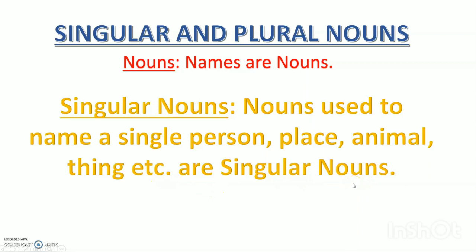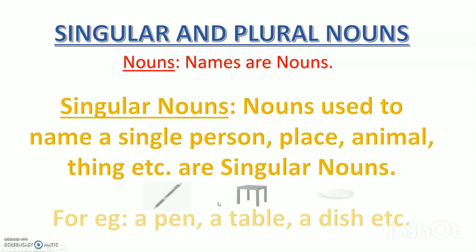Aise naam jinse humein kisi ek aadmi ke baare mein, ya ek jagah ke baare mein, ya ek animal ke baare mein, ya ek cheez ke baare mein pata chalta hai — aise namon ko hum singular nouns kehte hain. For example, a pen — when I say a pen, I mean one pen. A table means one table. A dish means one dish. I hope the meaning of singular nouns is clear.